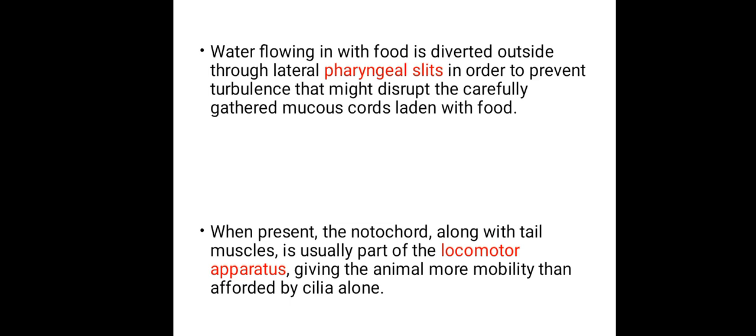When present, the notochord, along with tail muscles, is usually part of the locomotor apparatus, giving the animal more mobility than afforded by cilia alone. We say 'when present' because sometimes not all five features of the chordate body plan are present. For organisms that do have the notochord and tail muscles, these two become part of the apparatus for movement, augmenting movement alongside cilia.